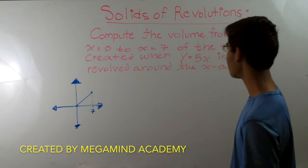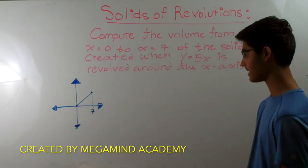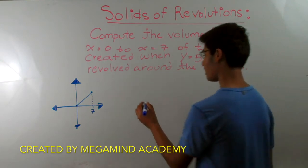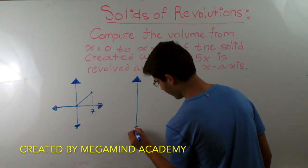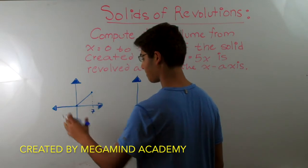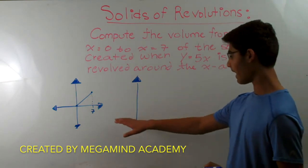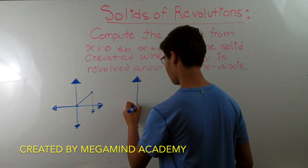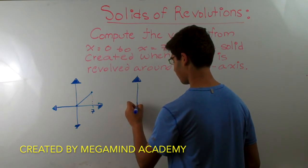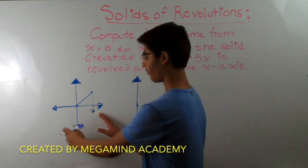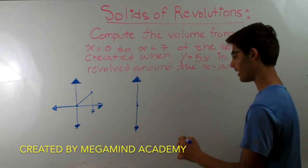The problem is asking to compute the volume when this line segment is revolved around the x-axis. Let's redraw from another angle — we're looking from the side, from the point of view of the x-axis, where y is equal to 0. If we flip and look straight down the x-axis, we won't be able to see it, but we know where y equals 0.